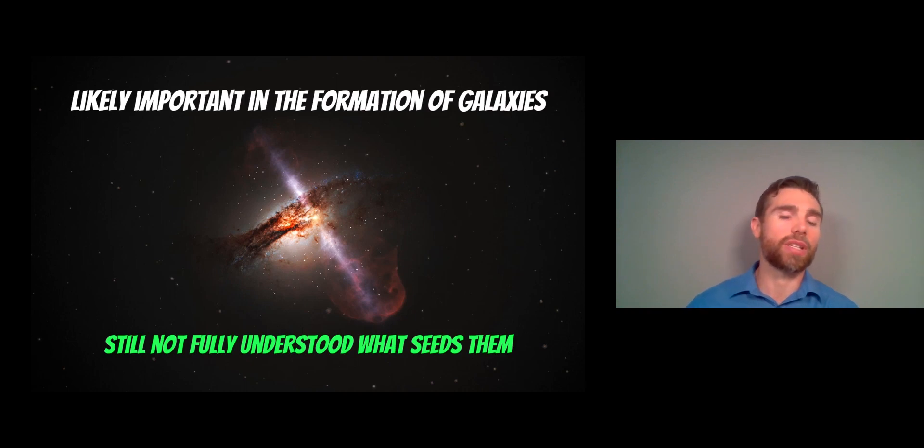It's not necessarily fully understood why they're there or how they grow, because they are very large. To get to the size they are, something has to happen early on that accelerates their growth. Something has to happen early on where they get to quite a significant size quite quickly, and then galaxies likely form around them. There's a bit of a missing link early on as to what might seed their growth, but observationally we know they're there.